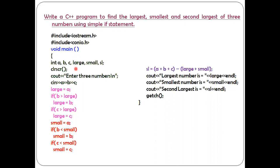Here I have declared six variables: a, b, c, large, small, and sl. sl stands for second largest. Among three numbers I need to determine which is the largest, which is the smallest, and which is the second largest — that I need to calculate and display at the end of the program. clrscr stands for clear screen function.